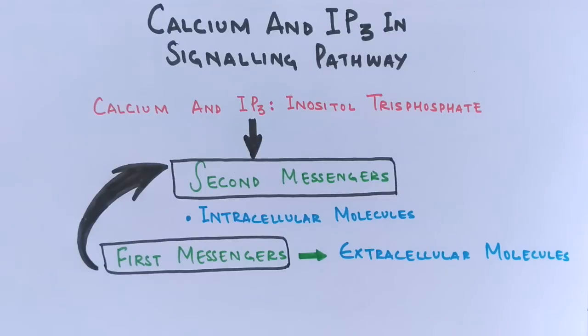Secondary messengers are therefore one of the initiating components of intracellular signal transduction cascade. Examples of second messengers include cyclic GMP, AMP, inositol trisphosphate (IP3) that we are going to discuss in this pathway, diacylglycerol, and calcium.